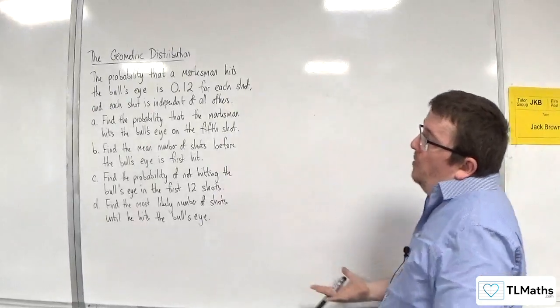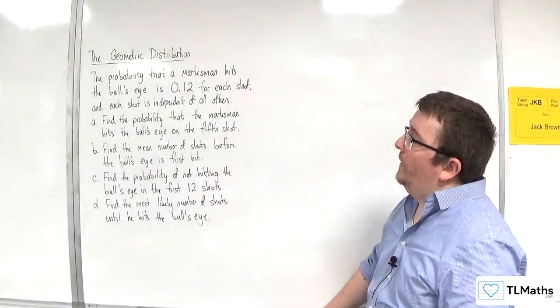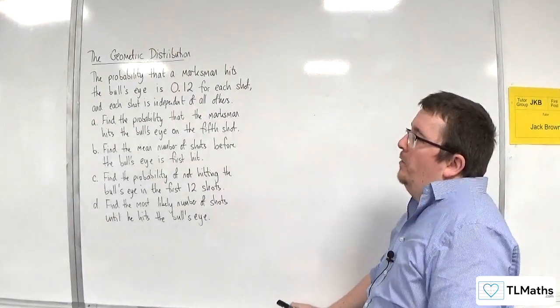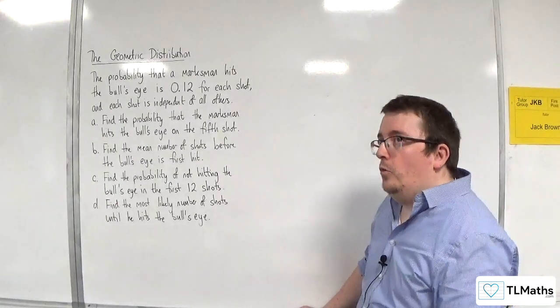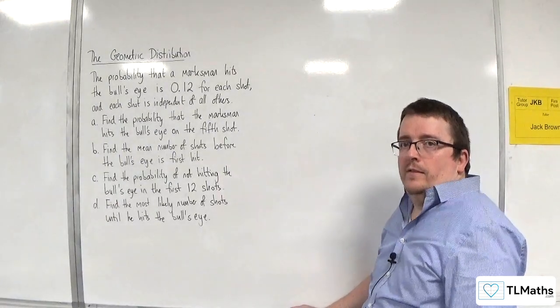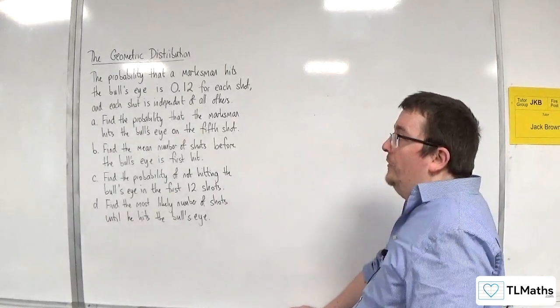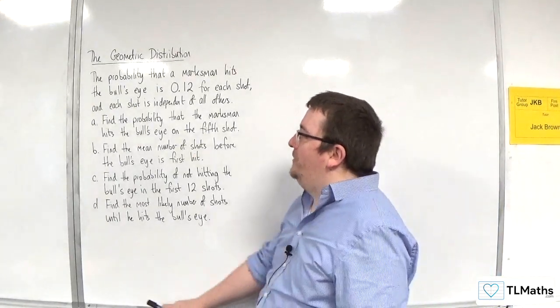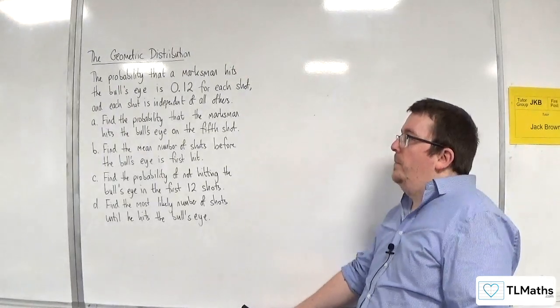In this video, we've got the probability that a marksman hits the bullseye is 0.12 for each shot, and each shot is independent of all others. Now, you might already be thinking that doesn't seem quite right. Wouldn't it be that the more shots that you take, the better that you would get? That is one criticism of this model already. Just to be clear, I fully understand that, and that might be something that you would have to discuss within the paper.